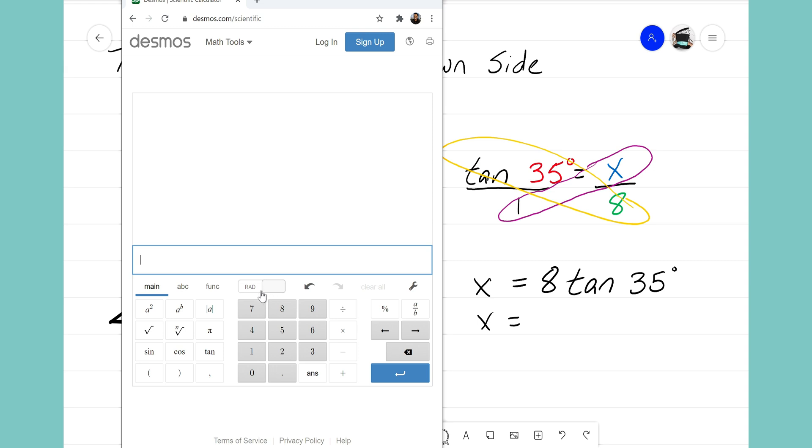First things first, you need to make sure that whatever calculator you're using that it's set on degree mode. We don't want it set up on radian mode. Radian mode is something that we use in another class. Instead we want to make sure that it's set to degree mode. So double check that it is on degree mode.